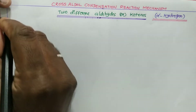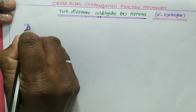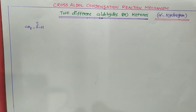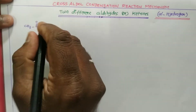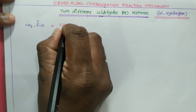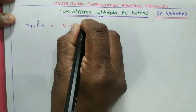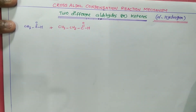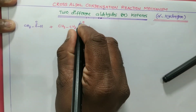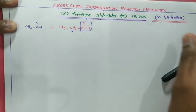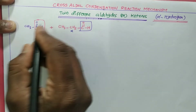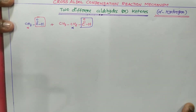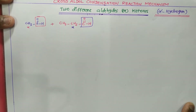Let's see the mechanism with an example. I am taking two different aldehydes: ethanal (CH₃CHO) and propanal (CH₃CH₂CHO). Both should have alpha hydrogen. For ethanal, the alpha carbon adjacent to the carbonyl functional group carries alpha hydrogen. Similarly for propanal, the alpha carbon also carries alpha hydrogen. Both reactants must have alpha hydrogen.